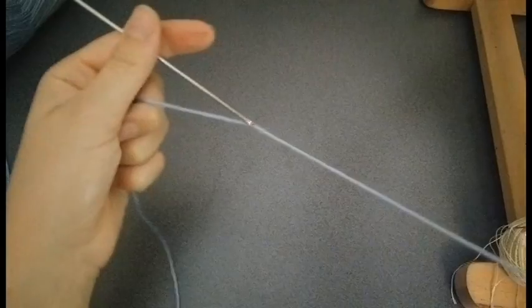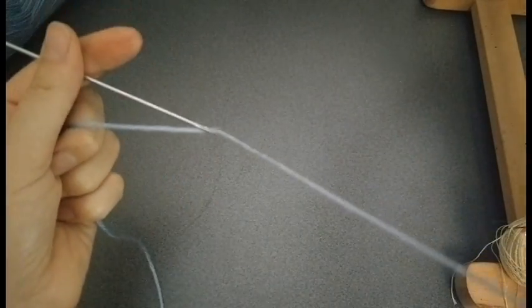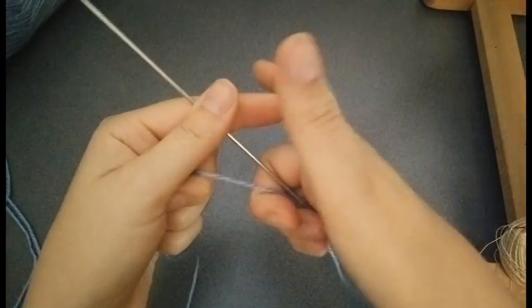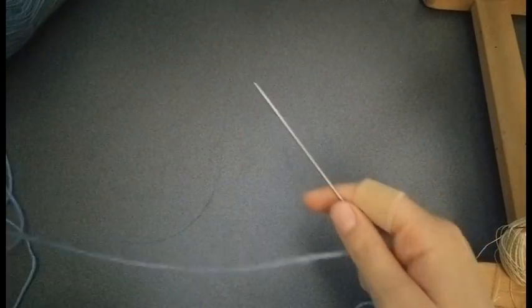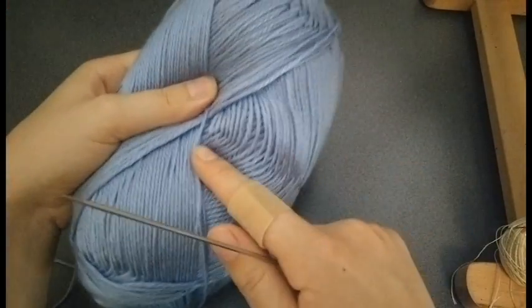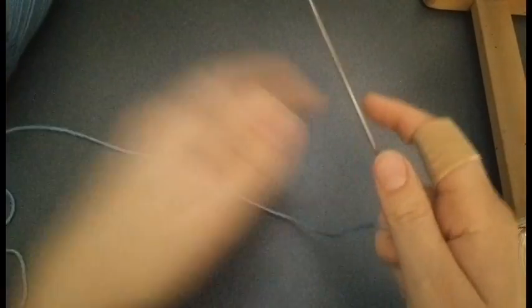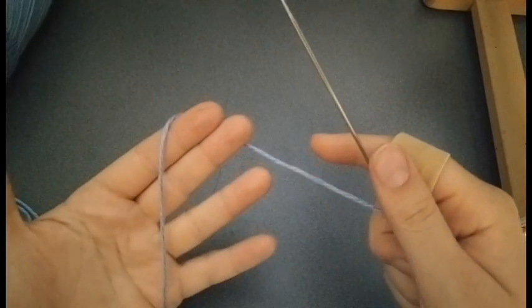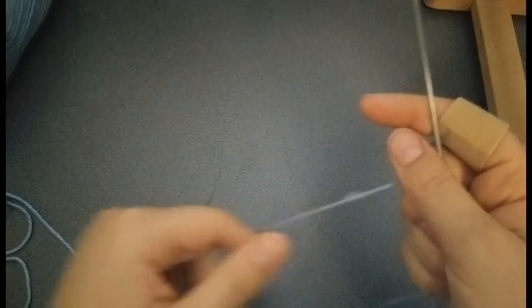To begin, thread your needle and put the tail thread out to the right, and then grab the needle with your right hand. Then take the ball of yarn and the rest of the yarn and put it off to the left, and you can now grab the yarn that is attached to the ball with your left hand. I put my pinky around this to grab it more tightly.